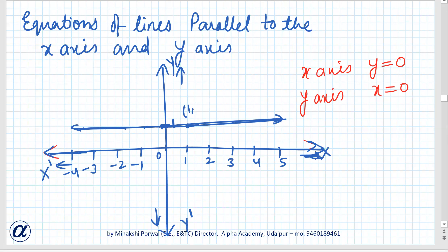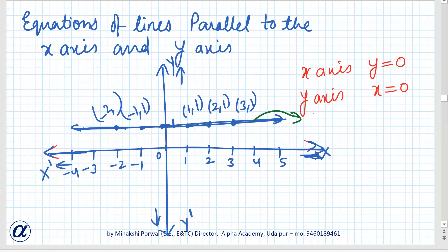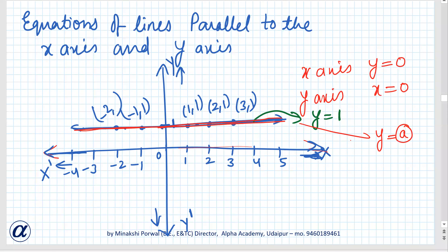What is this point? It is (1,1). What is this point? (2,1). What is this point? (3,1). This is (minus 1, 1). This is (minus 2, 1). So, the equation of this line is given by y equals 1. The x-axis is y equals 0. Any line parallel to the x-axis has equation y equals a, where a is the value of y. Any line parallel to the x-axis will have equation y equals a.